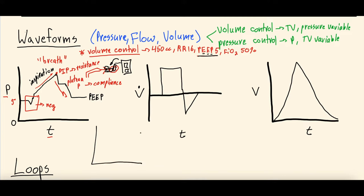If loops appear to lie flatter — bigger pressure changes with smaller volume changes — that can indicate decreased compliance. Conversely, loops that sit more upright — smaller pressure changes with larger volume changes — suggest improvement in compliance. So a flatter loop correlates with worse compliance, and a more upright loop correlates with better compliance. We'll discuss this further in the future pathology video.